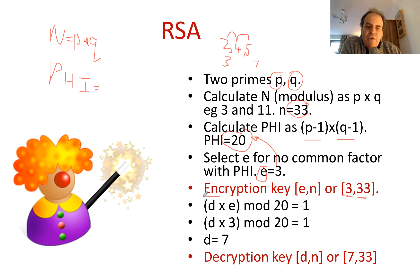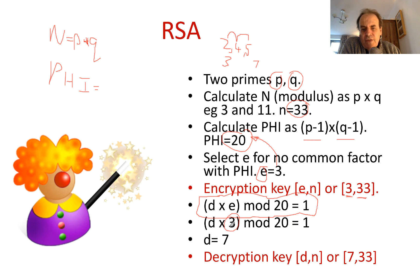Now we must make sure that the equation E times D mod Phi equals 1 holds true. Since E is 3, we try values of D: 1, 2, 3, 4, 5, 6, 7. Seven works — 7 times 3 is 21, mod 20 equals 1. So our decryption key D is 7.